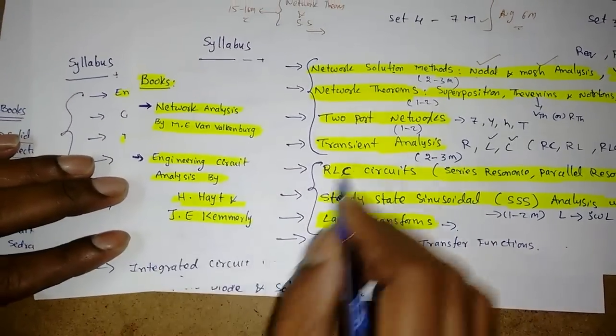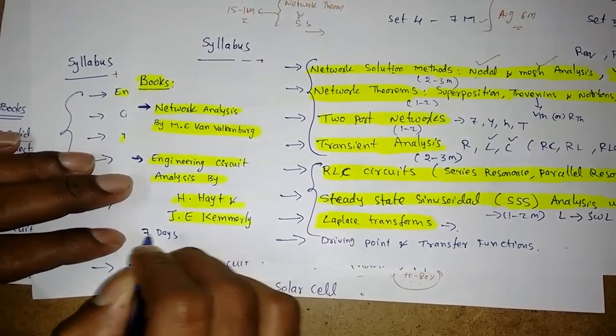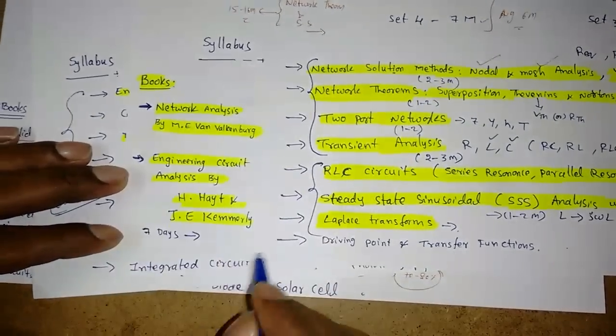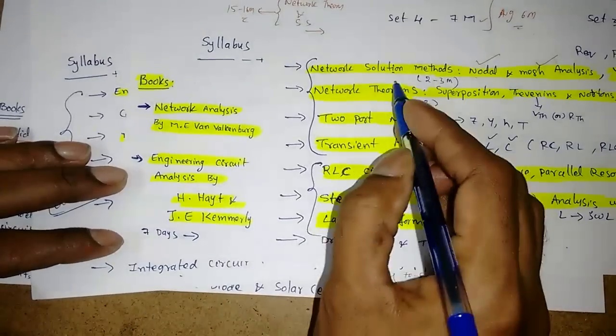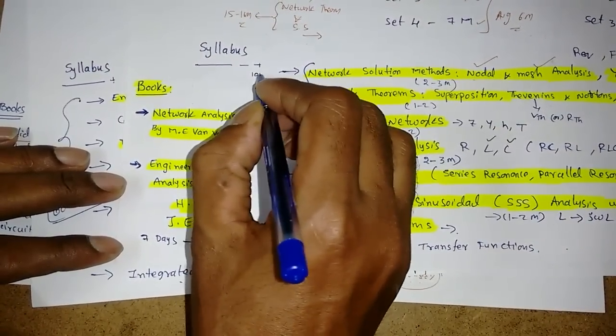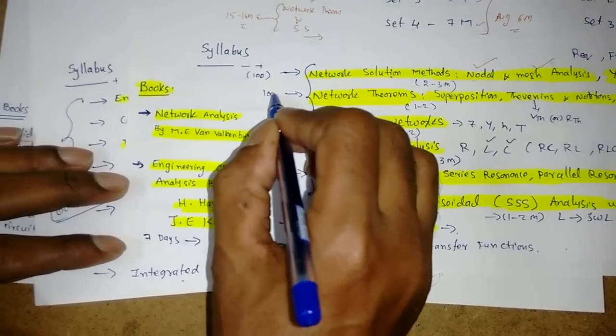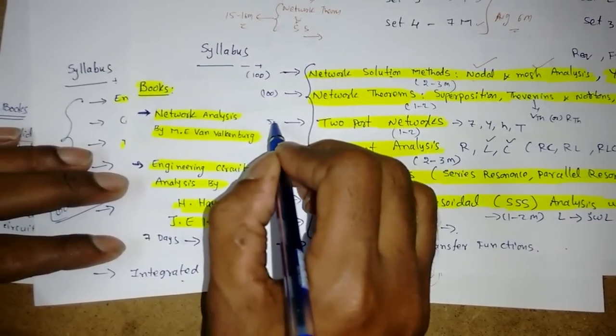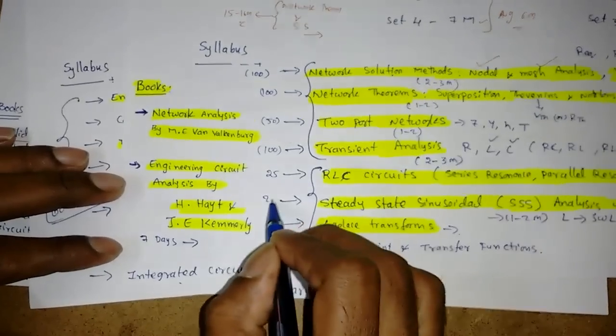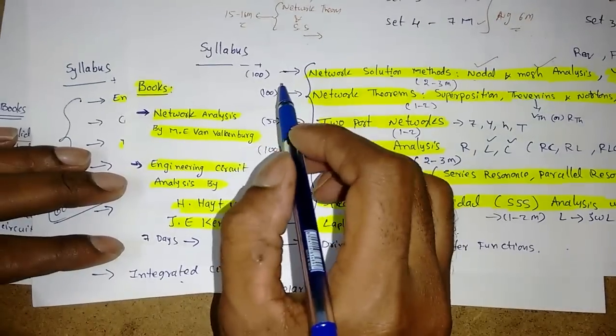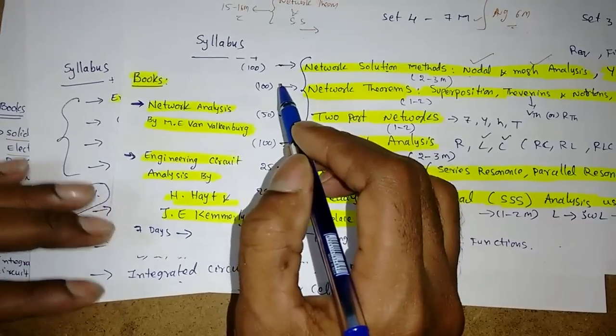If you follow this criteria and if you spare seven days, or we can go for five days also, but seven days is sufficient for network theory preparation. My suggestion is, suppose there is network solution methods, you have to do 100 number of problems. Then only we can do in the GATE. Similarly for network theorem 100, two port networks it's not necessary, you can go up to 50 varieties of problems. Then transient analysis again we have to do 100. RLC circuits approximately 25, steady state 25. So at least it's not about exam, we have to do more. Sufficient practice is necessary.